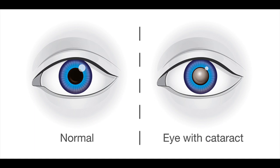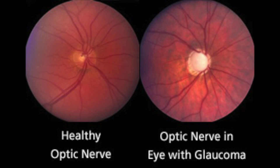Diabetes is also frequently associated with earlier onset of cataracts, or a cloudy lens inside the eye, and two times the risk of glaucoma, or death of the optic nerve, which is the nerve that connects your eye to your brain. If you have a diagnosis of diabetes, you need to get regular eye examinations and do your best to control your blood sugars to prevent irreversible blindness.